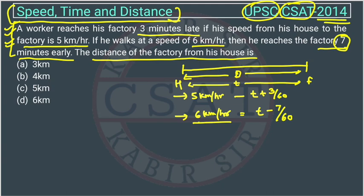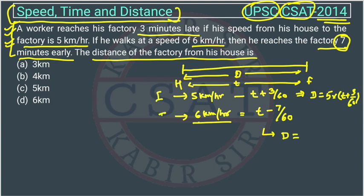In the first case he is taking 3 minutes more, so we add; in the second case he is taking 7 minutes less, so we deduct. Applying the simple formula of speed and distance: distance D = 5 × (T + 3/60). Similarly, since the distance is the same in both cases, distance D = 6 × (T − 7/60).